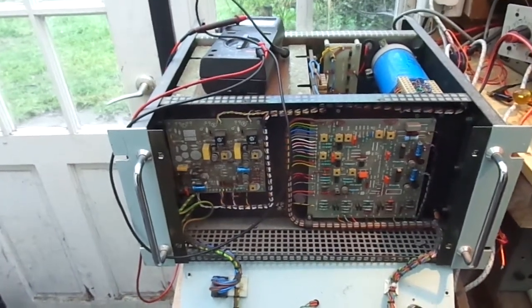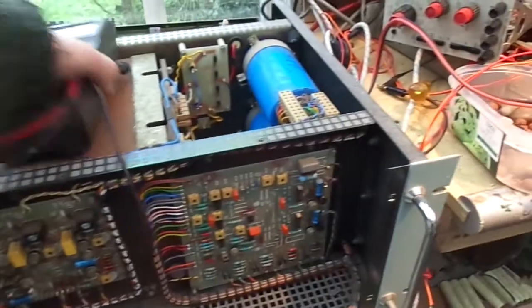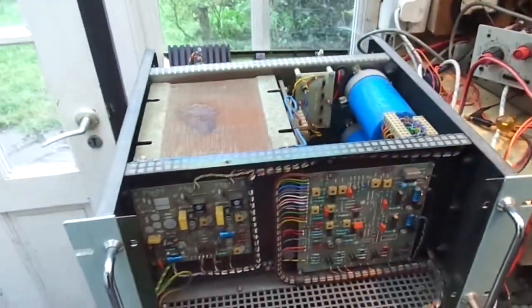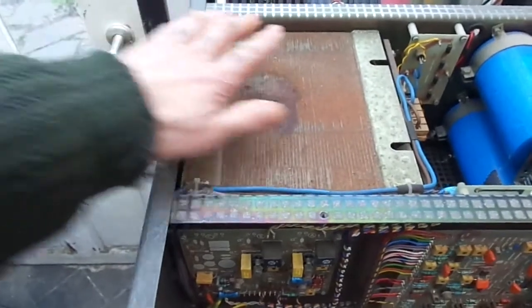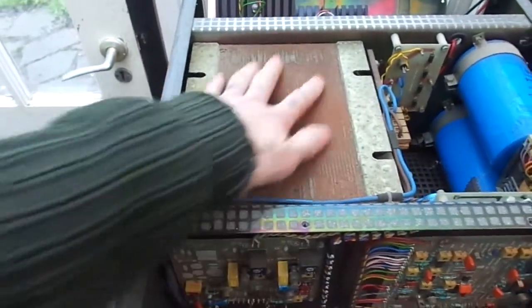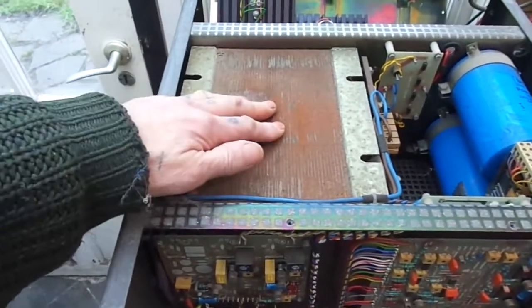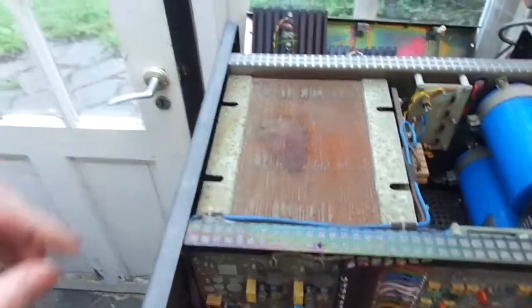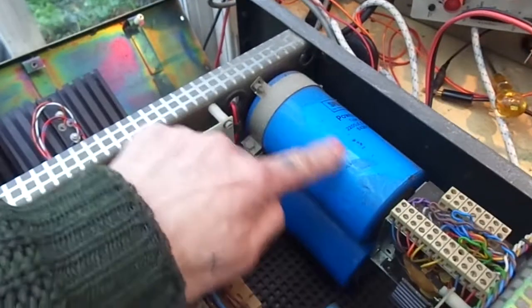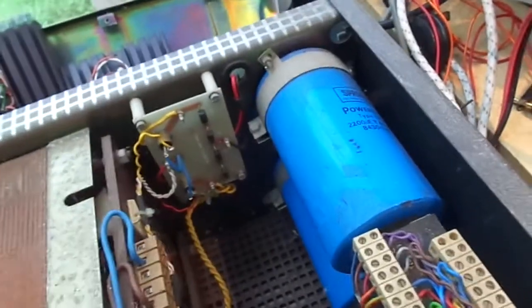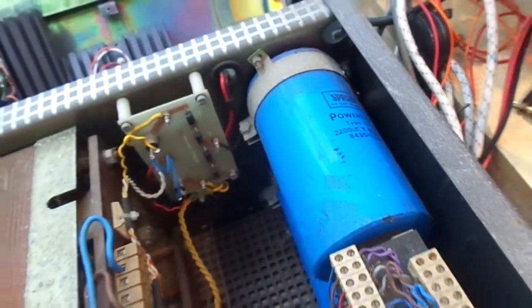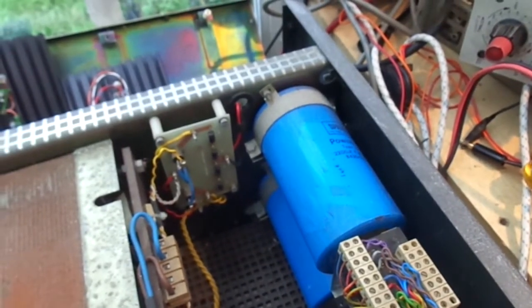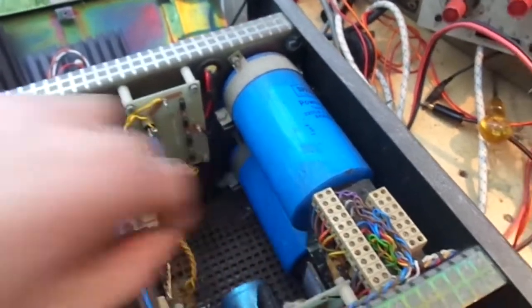As you can see it's a massive old thing. I mean look at that. That's my hand. That's the power transformer or one of them. That's the main big power transformer and we've got massive caps in there as well which are 400 volt, 2200 microfarad, two of those.